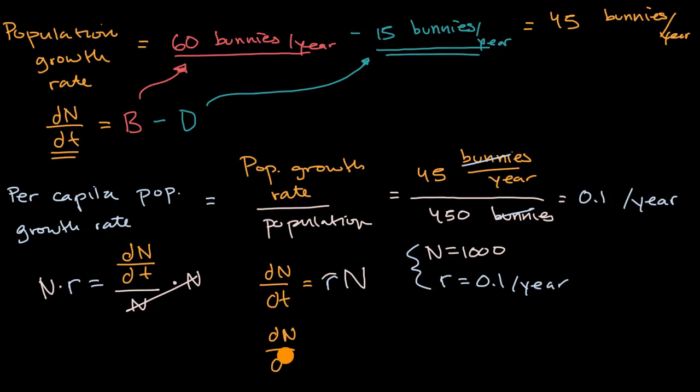Well in this situation, dN/dt is going to be our per capita population growth rate. So it's going to be 0.1 per year times our population. Times 1,000 bunnies. Bunnies, I'll keep my units here. Bunnies.